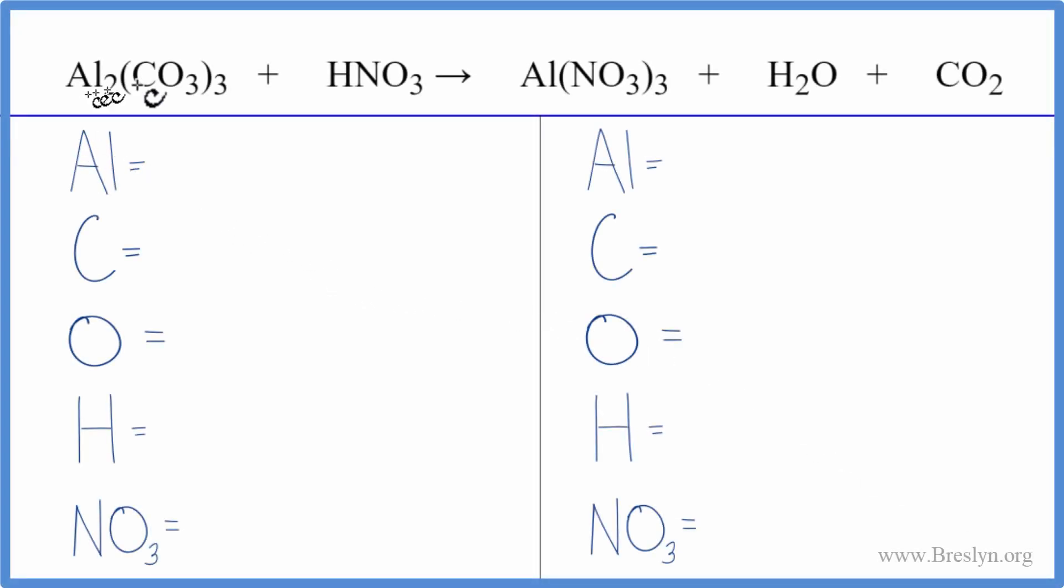So to balance this equation, we have aluminum carbonate plus nitric acid. We'll count the atoms up. We'll use a little bit of a trick to make it easier. Let's try this.